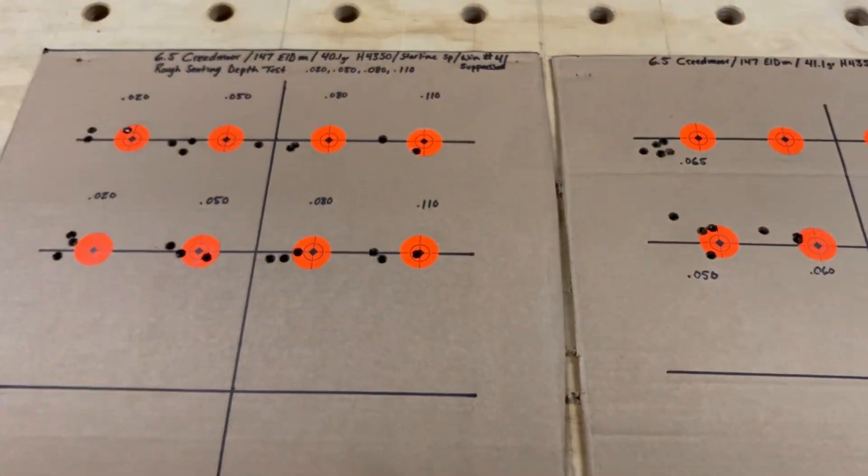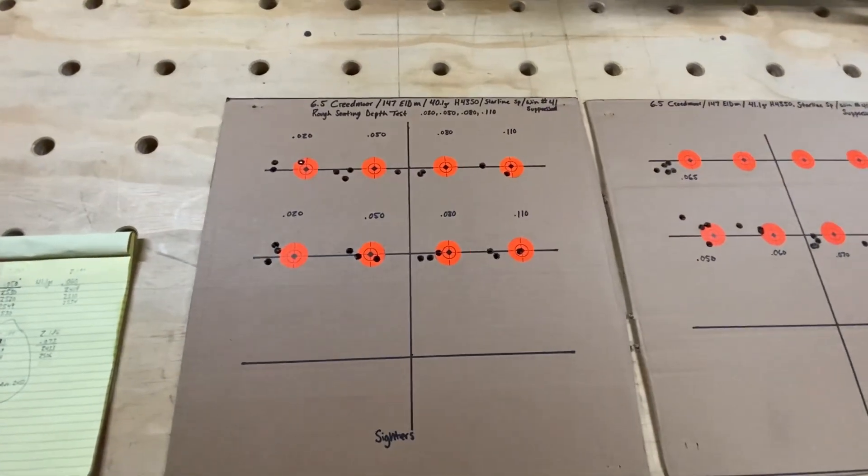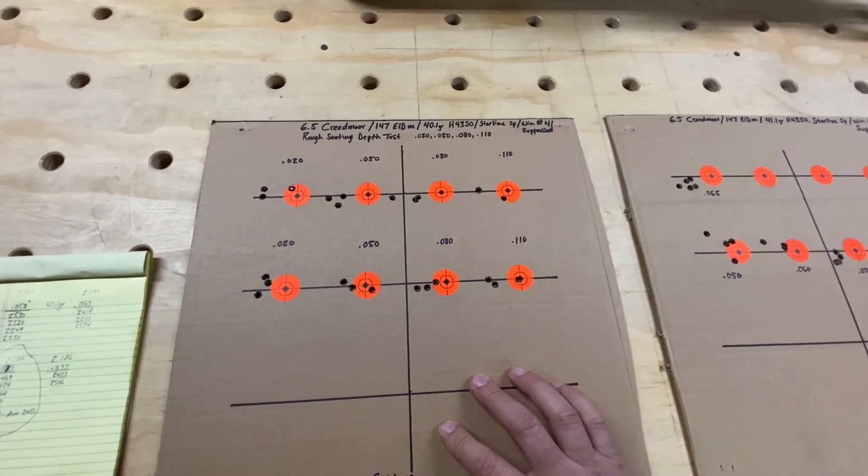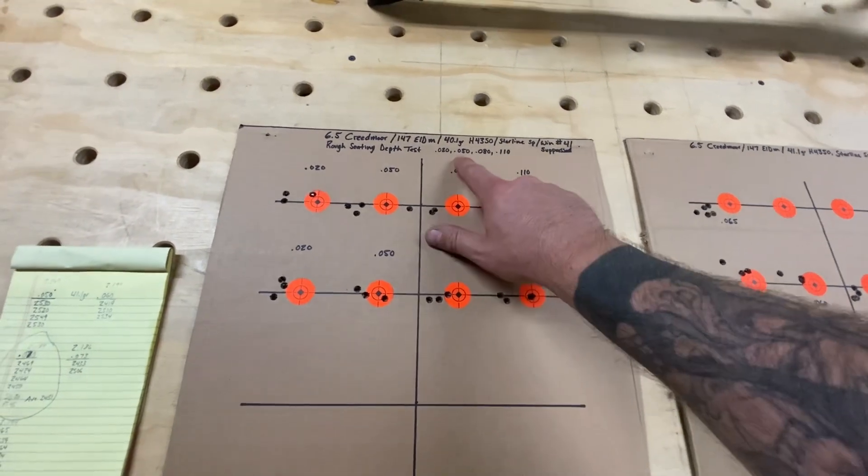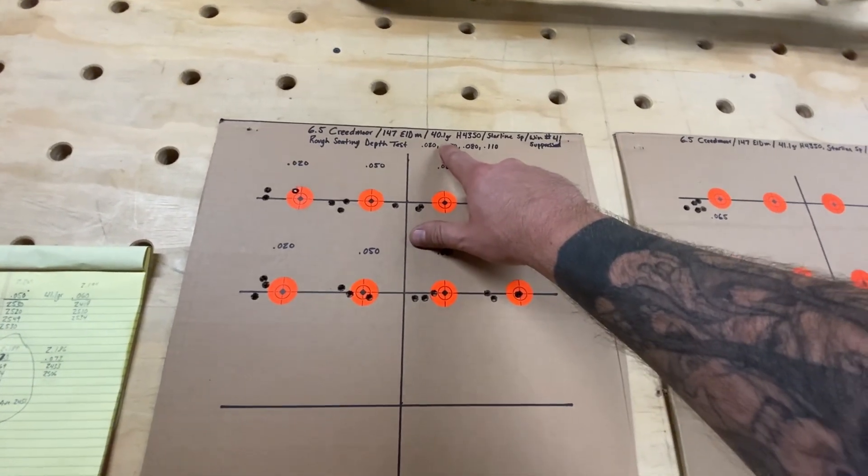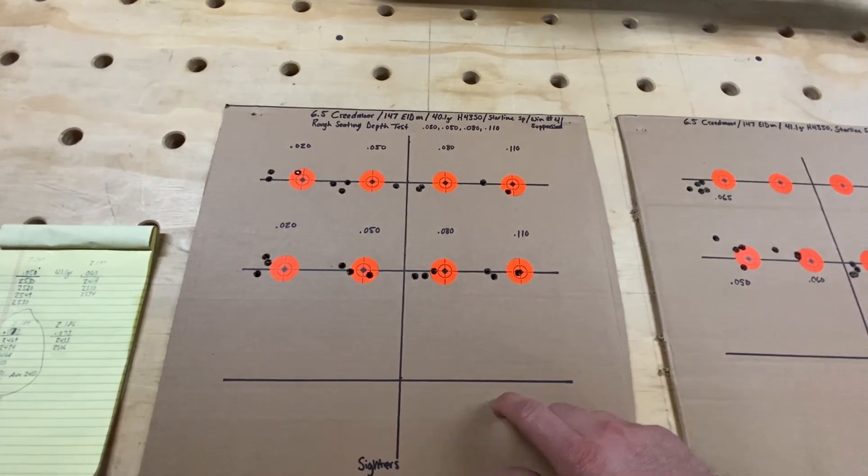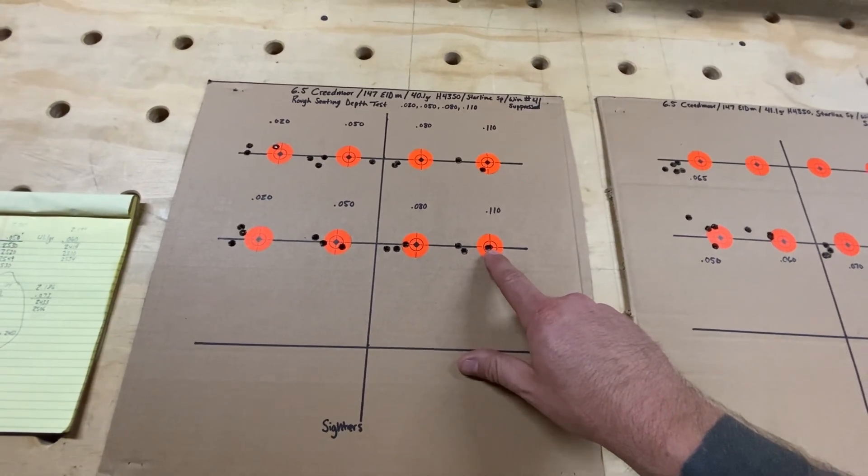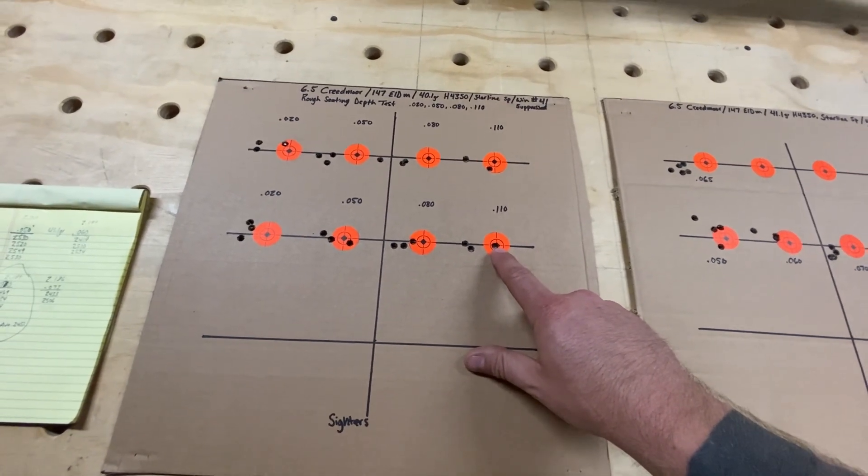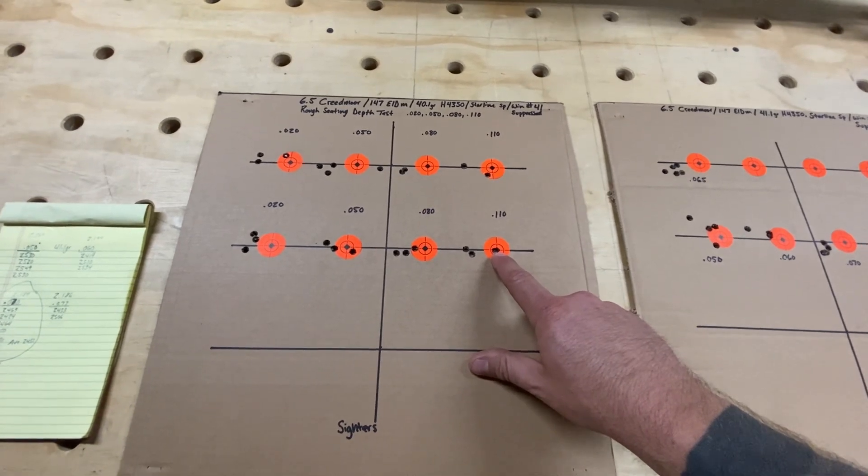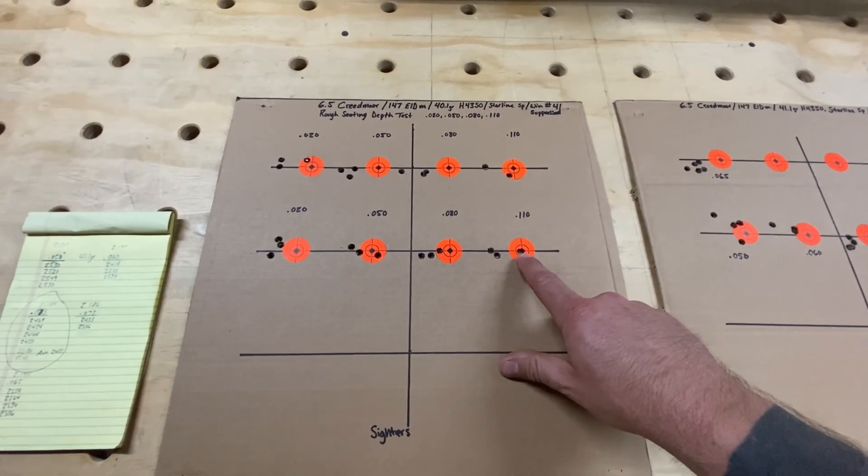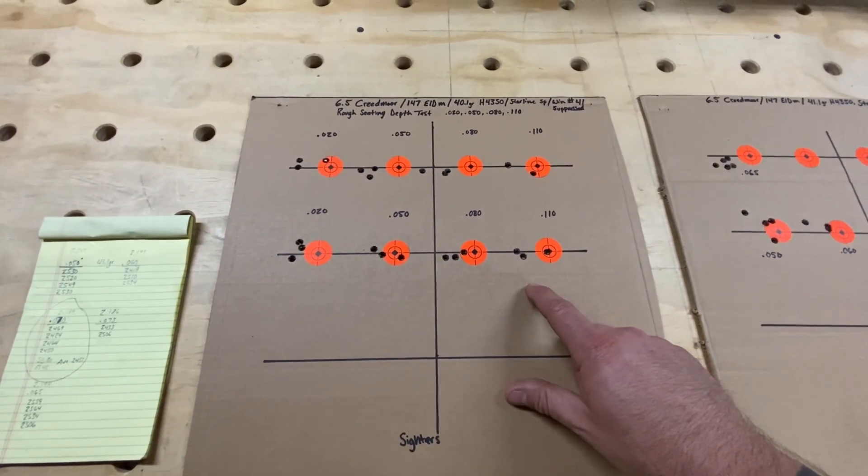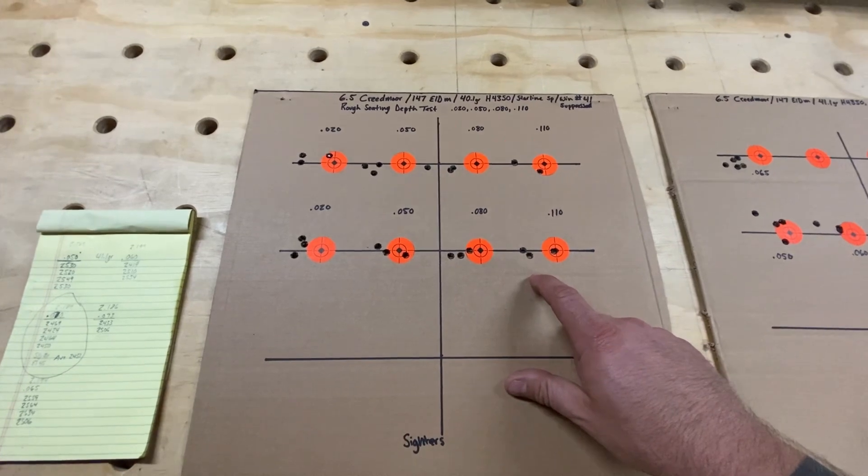We can move over here. You can see this first test here was a rough seating depth test. Once I picked my load, I actually backed it off to 40.1, which is also one of those flat spots, but it's kind of middle of the range and it's a little safer. Because we were going to be seating these bullets all the way back to 110 thousandths off the lands. And I didn't want to run into any kind of like pressure spikes. So when I do my rough seating depth test, I wanted to run it a little lower in the powder charge range.